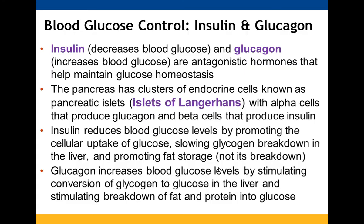Insulin and glucagon are probably the most familiar antagonistic hormone pair. Insulin causes blood glucose levels to decrease, while glucagon causes them to increase. The pancreatic islets (islets of Langerhans) contain alpha cells that make glucagon and beta cells that make insulin. Insulin reduces blood glucose by causing cells to take up glucose, preventing glycogen breakdown in the liver, and converting glucose to fat. Glucagon raises blood glucose by breaking down glycogen into glucose in the liver and also breaking down fat and protein into glucose.